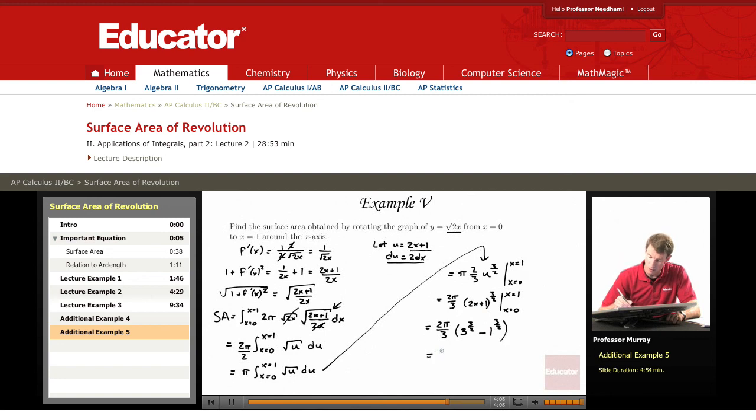And again, it simplifies down to 2 pi over 3. 3 to the 3 halves is the same as 3 square roots of 3, minus 1 to the 3 halves is just 1. And we get our final answer.